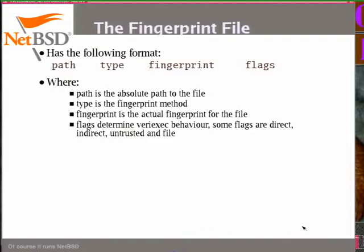The fingerprint file has a basic format: the file path, the type of fingerprint method, the actual fingerprint hash, and some flags that determine the behavior of Verified Exec. The flags include: untrusted, file, direct, and indirect — those are the basic ones, with some convenience aliases combining them.